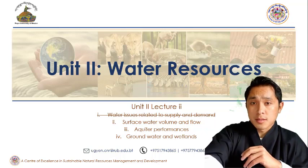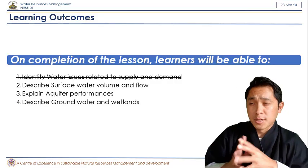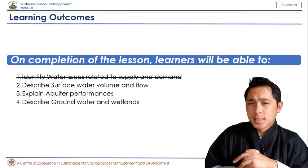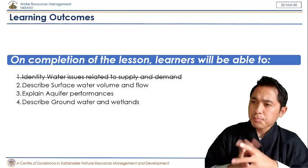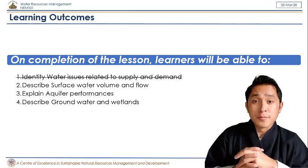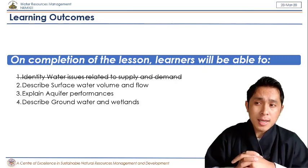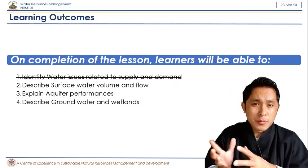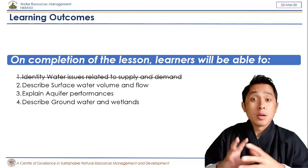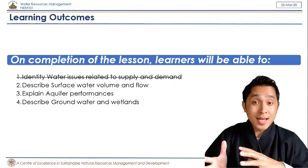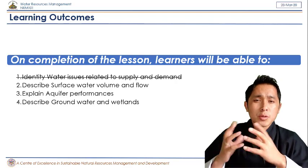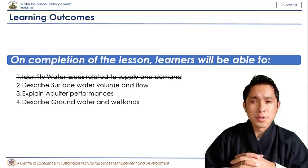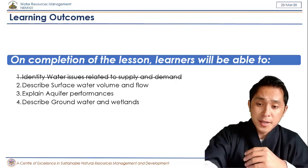Let us first look at the learning outcomes. Three things to learn from this lesson: one is what is surface water volume and flow, another is what is an aquifer and what is aquifer performance, and the last one is groundwater and wetlands and how they are related.